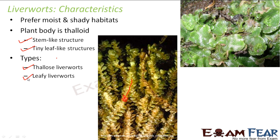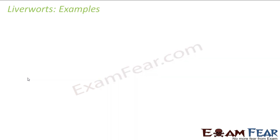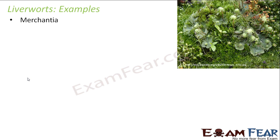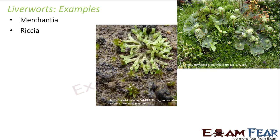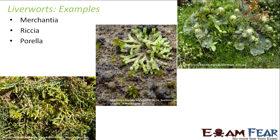Considering examples of liverworts, Marchantia is a very popular example. Here you can see in the picture they have got this umbrella kind of structure. Another example is Porella. They do not exactly look like a plant with a distinct stem and distinct leaves, but they at least have some basic structure of leaves and stems. So these are some of the examples of liverworts.